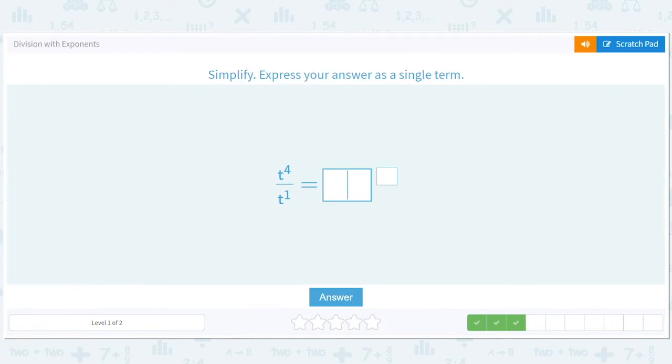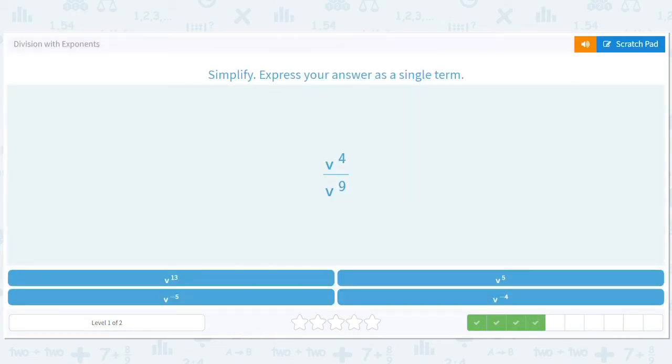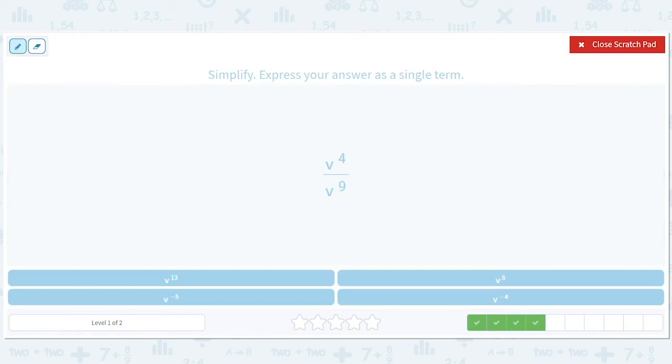How about this, four minus one equals three so we should just have t to the three. Over here we'll have four minus nine equals negative five so we'll just have v to the negative five.